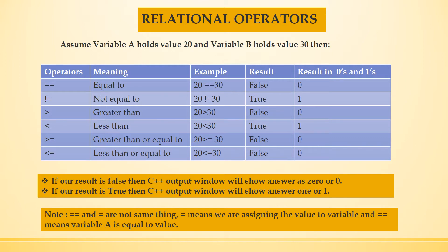One thing you have to keep in mind: if in a table the result is false, the output window will show the answer 0. If the result is true, then it will give 1 in the output window.